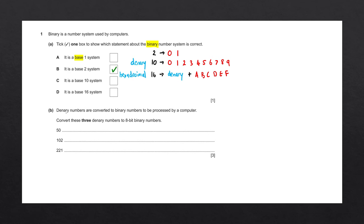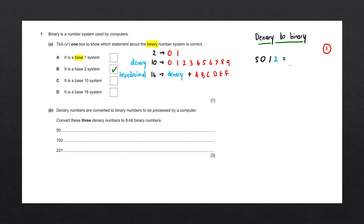Question B says denary numbers are converted to binary numbers to be processed by a computer. Convert these three denary numbers to 8-bit binary numbers. We'll go through two separate methods to show how they differ and how one might be easier to use than the other, but it is entirely up to you which method you use in the exam. Let's start with the denary number 50 and use method 1.